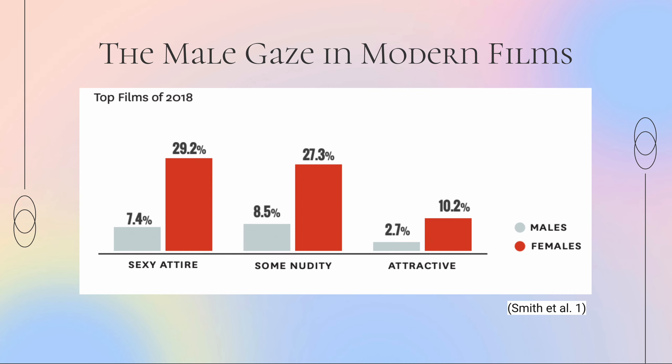This type of blatant objectification is much more common for female characters than male characters. In a 2018 study done by USC Annenberg, they found that women on screen are at least three times as likely to be shown in sexy attire, showing some nudity, or referred to as attractive compared to male characters. This study reinforces Laura Mulvey's theory that film caters to the heterosexual male point of view and in turn sexualizes female characters at a much higher rate.